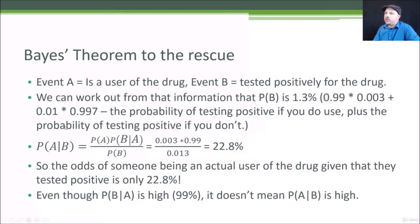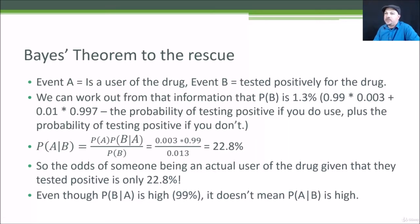Now if you do the math, the probability of being a user of the drug given that you tested positively — what's the probability of a positive test result meaning that you're actually a drug user — works out to the probability of being a drug user overall, which is 0.3%, times the probability of testing positive given that you're a user, which is 99%, divided by the probability of testing positively overall, which is 1.3%. So the probability of being an actual user of this drug given that you tested positively for it is only 22.8%.